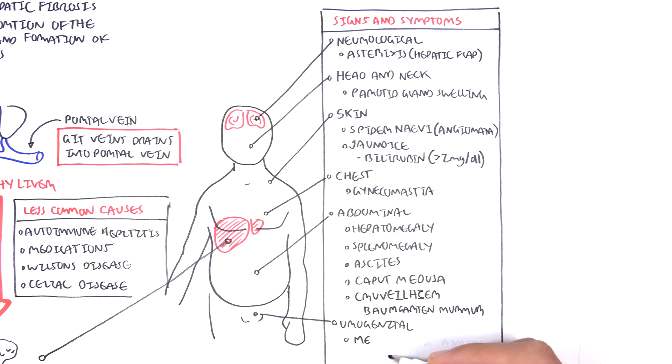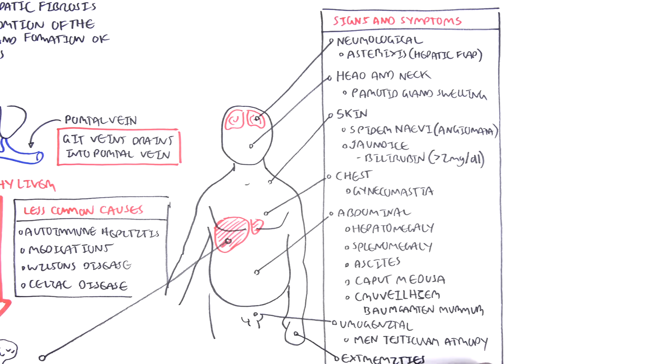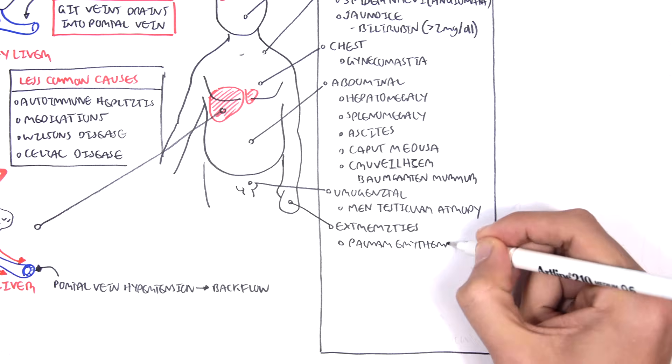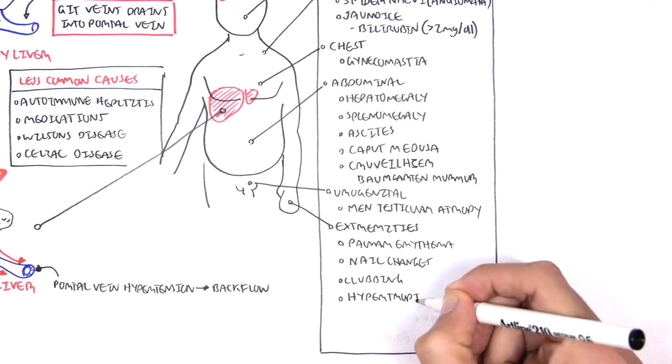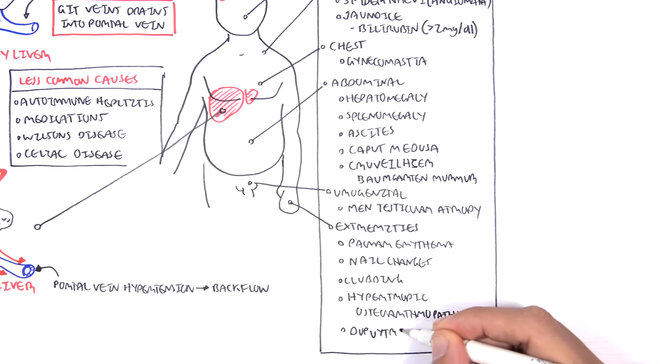Urogenital involvement, men can have testicular atrophy. The extremities, you can have palmar erythema, nail changes like clubbing, hypertrophic osteoarthropathy, as well as Dupuytren's contractions.